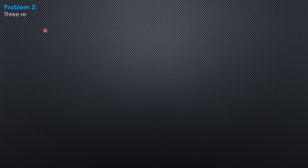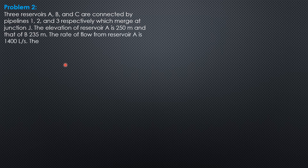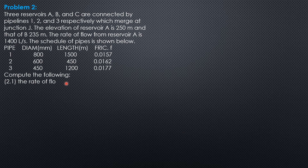Example 2 on reservoir problems. Three reservoirs A, B, and C are connected by pipelines 1, 2, and 3, respectively, which merge at junction J. The elevation of reservoir A is 250 meters and that of B is 235 meters. The rate of flow from reservoir A is 1,400 liters per second. The schedule of pipes is shown below.